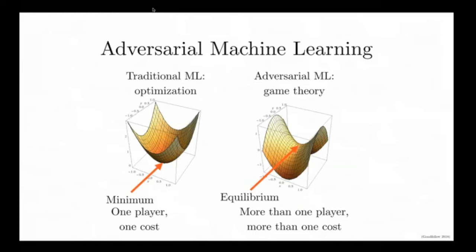For example, what is the negative log probability that the model will assign the correct labels to all of the different images in an object recognition data set? This is the way that we train things like classifiers, many different kinds of generative models, and even some kinds of reinforcement learning.